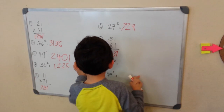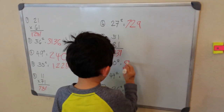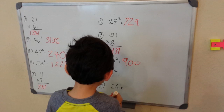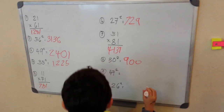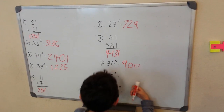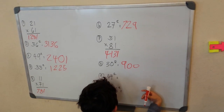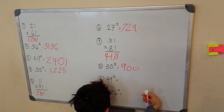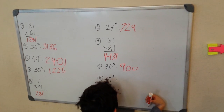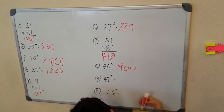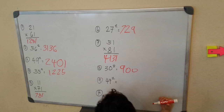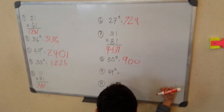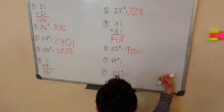Number 8: 30 squared is 900. Number 9: 47 squared. 15 plus 7 is 22. How far is 47 away from 50?